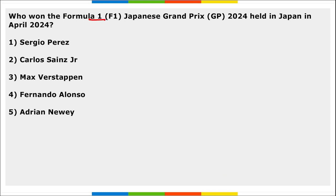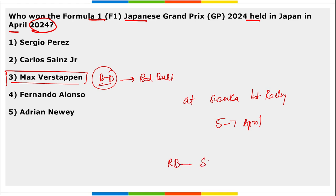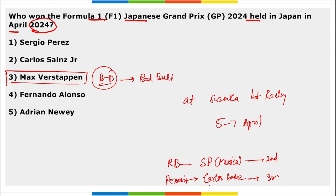Next: who won the F1 Japanese Grand Prix held in Japan in April 2024? It is Max Verstappen — a Belgian-Dutch driver who drives for Red Bull. This race was held at the Suzuka International Racing Course in Japan, from 5th to 7th of April. Red Bull's other driver Sergio Perez of Mexico secured second position, and Ferrari's Carlos Sainz of Spain secured third position.